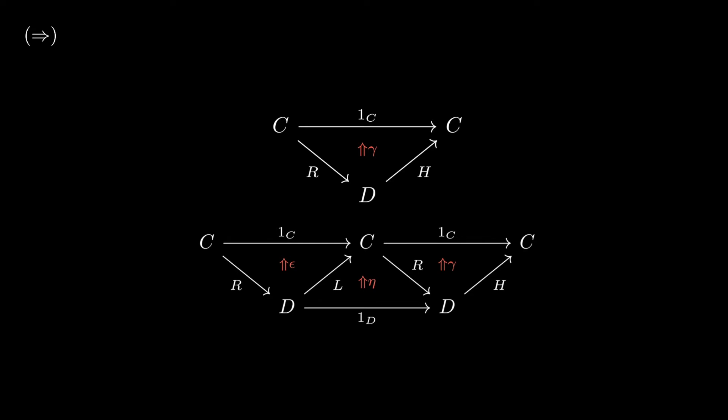Because we can collapse the left two triangles to the identity on R. So we're really kind of multiplying by 1 in a sense. But this already shows that gamma factors through epsilon. In particular, it's equal to epsilon followed by eta and gamma.